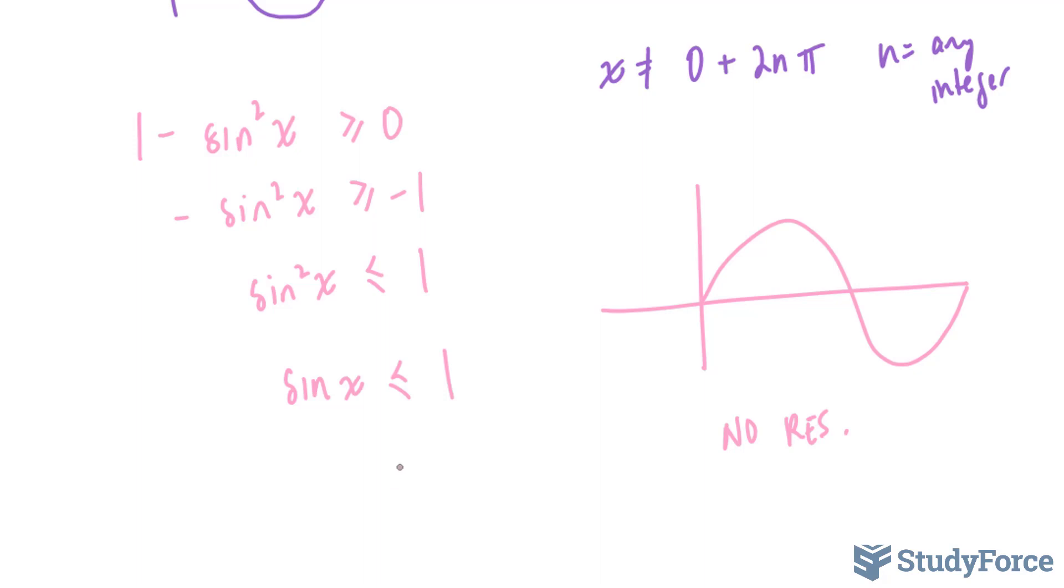And to write this down in a formal way, domain includes x such that x cannot equal 2nπ for all real x values.